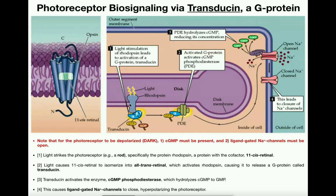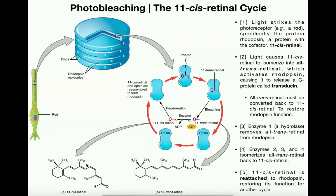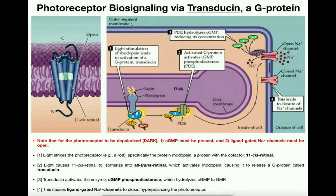When light strikes rhodopsin — remember, rhodopsin is opsin plus 11-cis-retinal — this 11-cis-retinal undergoes a photoisomerization, or we say it isomerizes, into something called all-trans-retinal. Notice that this molecule underwent a change in conformation: it had a bend before, but in all-trans-retinal it's just a straight chain. That isomerization is extremely important and only happens when light hits 11-cis-retinal. When it isomerizes to all-trans-retinal, that activates rhodopsin.